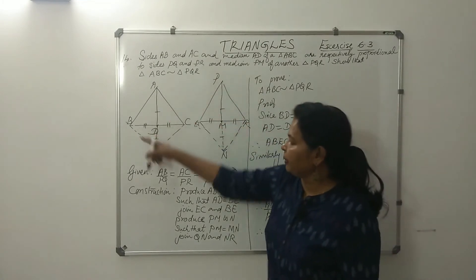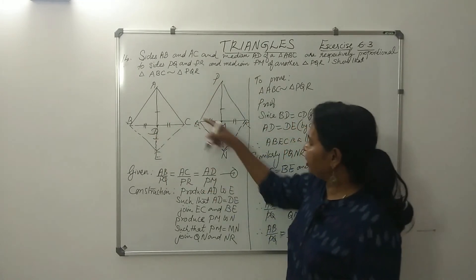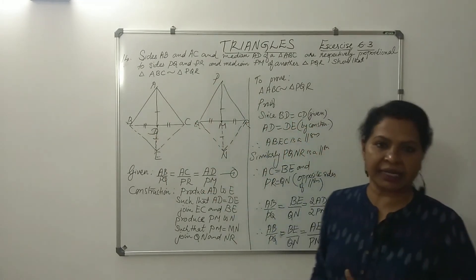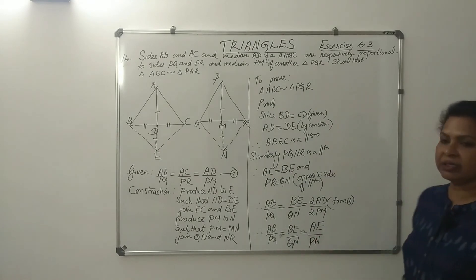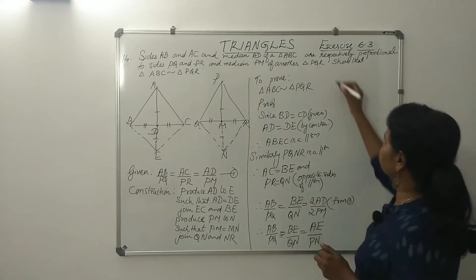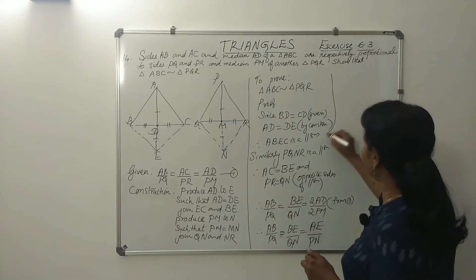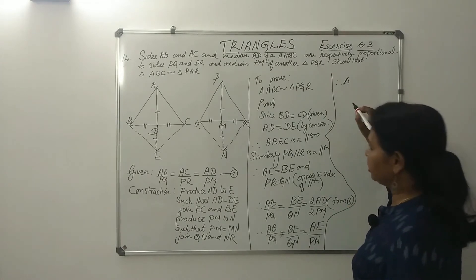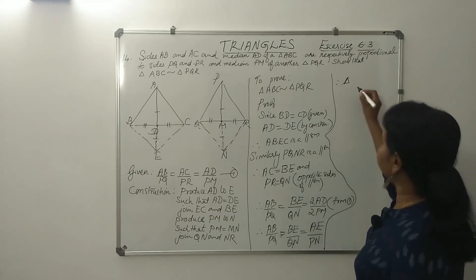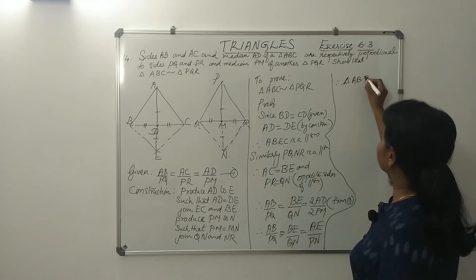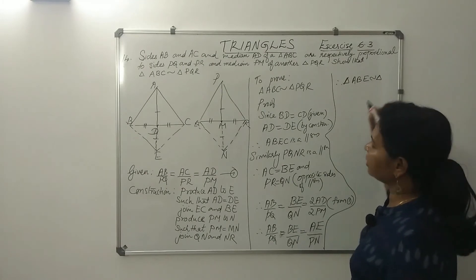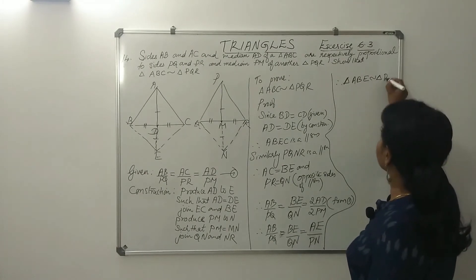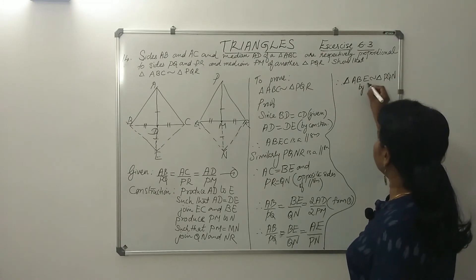In triangle ABE and triangle PQN, the three sides are proportional: AB/PQ = BE/QN = AE/PN. So they are similar by SSS similarity. Therefore, triangle ABE is similar to triangle PQN by SSS similarity.